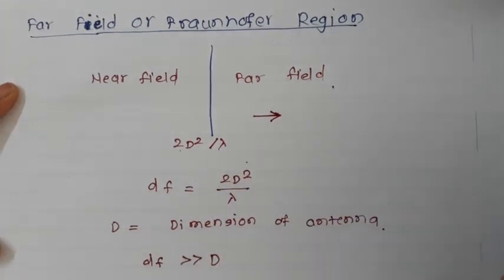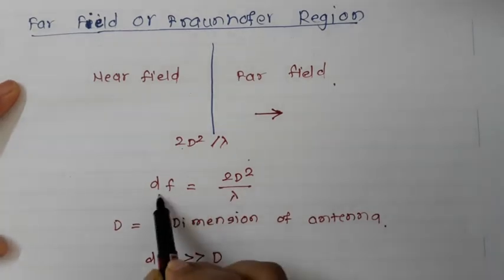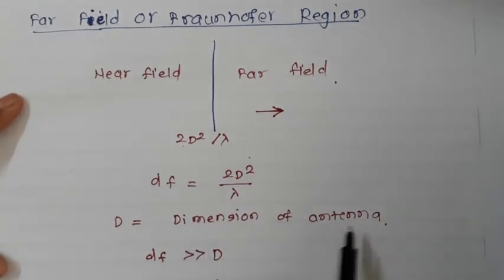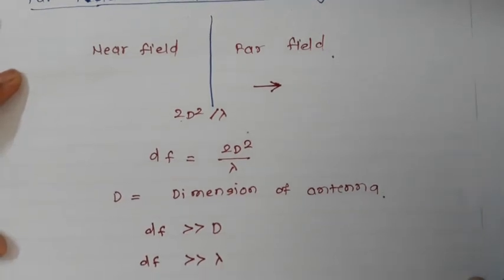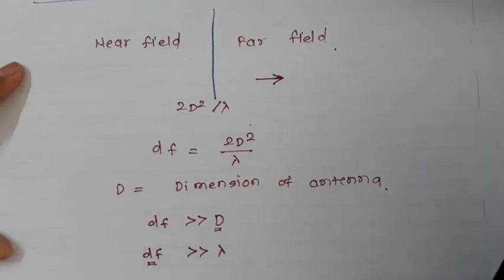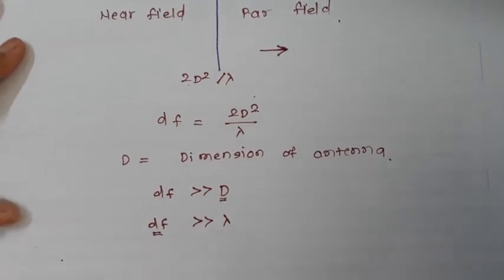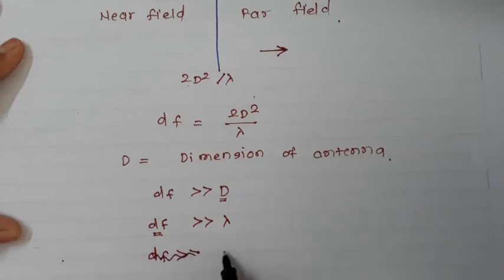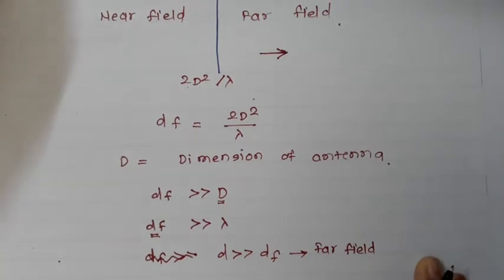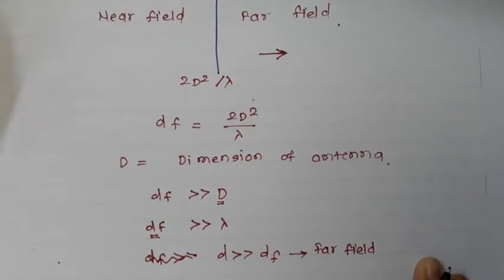The Fraunhofer distance DF is equal to 2D² / λ, where D is the dimension of the antenna. For the far field region, the distance must be very much greater than DF, very much greater than D, and very much greater than λ. Any distance greater than the Fraunhofer distance DF is considered the far field region, where we apply the Friis free space model.